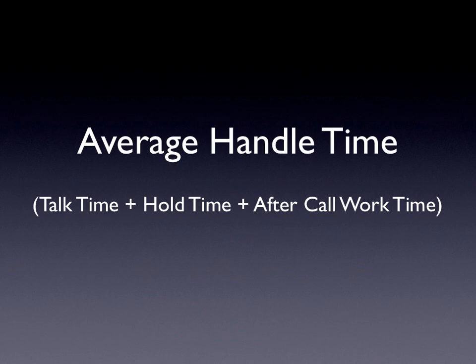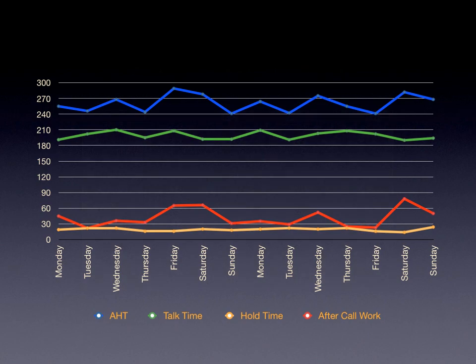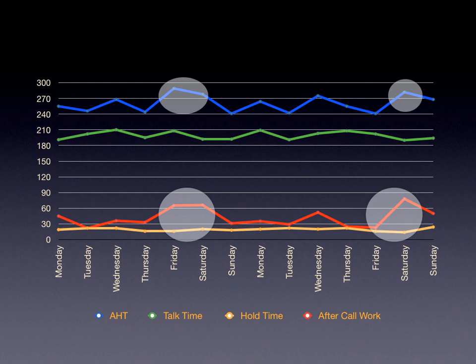Let's take a look at average handle time, which I define as talk time plus hold plus after call work. It's very important to do both a team perspective and an individual perspective because they can tell you different data and show you different activities within your contact center. Here again, it's hard to pick out any particular trends from the numbers. But when we graph over the period of two weeks, we can see a couple of anomalies — on Fridays and Saturdays, the after call work tends to pop up. The report tells you much quicker than just numbers that there's a particular issue on those days, impacting average handle time. But it also tells you that talk time and hold time are very steady, so the issue is really the after call work on Fridays and Saturdays.